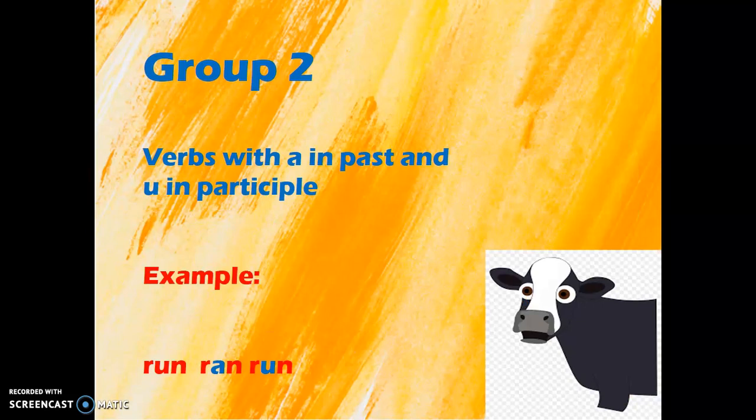Group number two, verbs with A in the past and with U in participle. For example, run, ran, run.